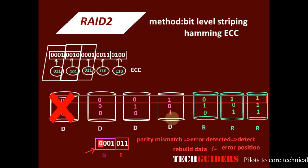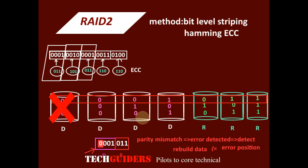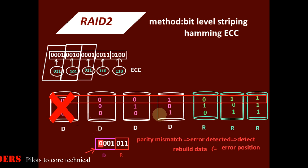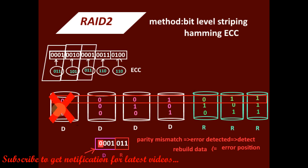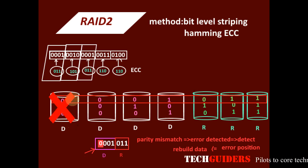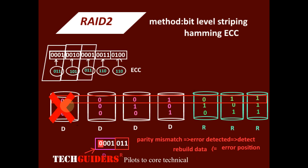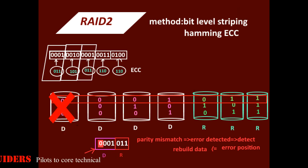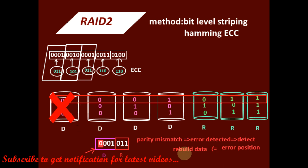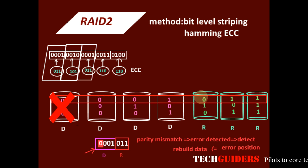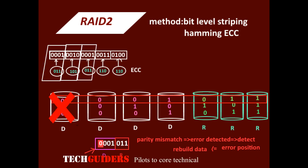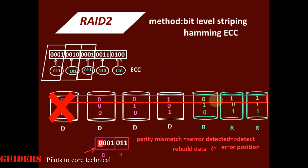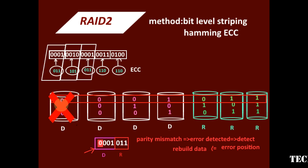In a practical system, we already know when a disk fails and which disk has failed — the disk controller itself will acknowledge it. The error is detected and the position of the error is already determined. We only need to repair the data on that disk, and for just rebuilding that data, this many redundant parity bits are not required.